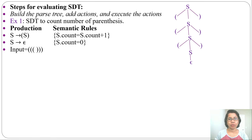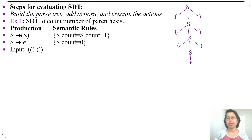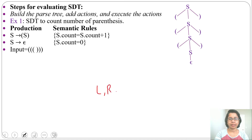We found this is S-attributed SDT. S-attributed SDT can be evaluated in bottom-up order during the reduction, or in post-order traversal when visiting the node for the last time. Post-order traversal is: left, right, then root.